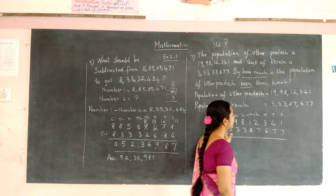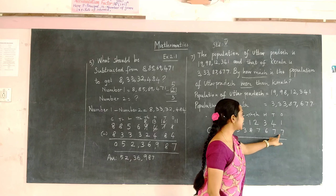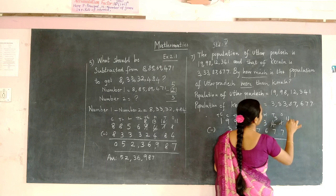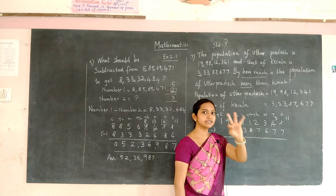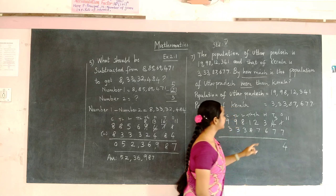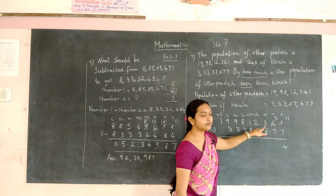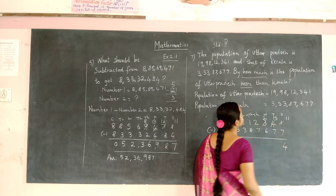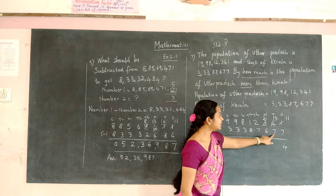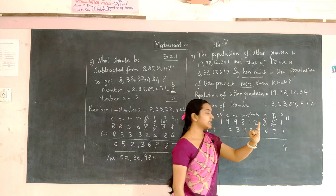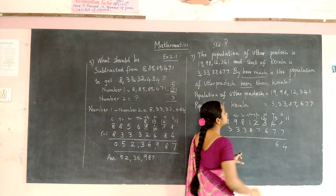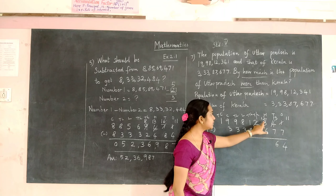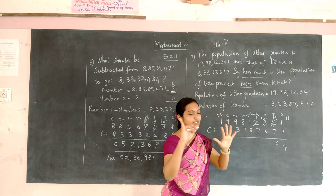We are going to subtract the numbers. 7 is greater than 1, so we cannot subtract — borrow 1 from 4. So 4 becomes 3 and 1 becomes 11. Start counting from 7 until you reach 11: 8, 9, 10, 11 — so the number is 4. Here also 6 is greater than 2, so borrow 1 from 3. Here also 7 is greater — borrow 1 from 2. Count from 6 to 12: 7, 8, 9, 10, 11, 12 — so the number is 6.